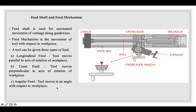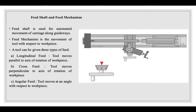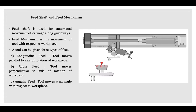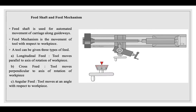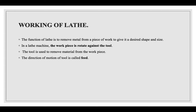The feed mechanism refers to the movement of the tool with respect to the workpiece. A tool can be given three types of feed: longitudinal feed, where the tool moves parallel to the axis of rotation; cross feed, where the tool moves perpendicular to the axis; and angular feed, where the tool moves at an angle. The function of the lathe is to remove material from a workpiece to give it a desired shape and size. The workpiece rotates against the tool, and the direction of motion of the tool is called feed.